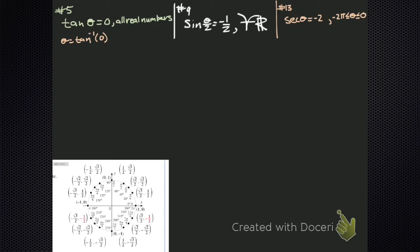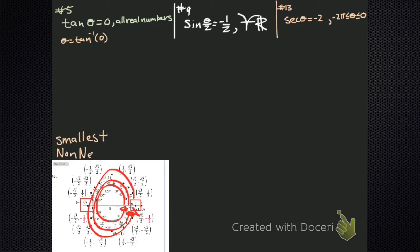That's the same as saying theta is the inverse tangent of zero. We apply inverse tangent to both sides — the tangent of the inverse tangent is just the argument theta. So we go down to our unit circle, and we find that's going to happen in two spots on opposite sides of the unit circle. How are we going to write our answer? We find the first positive place, because every time you go around the circle, you're going to get a coterminal angle. Our smallest non-negative radian measure happens to be zero.